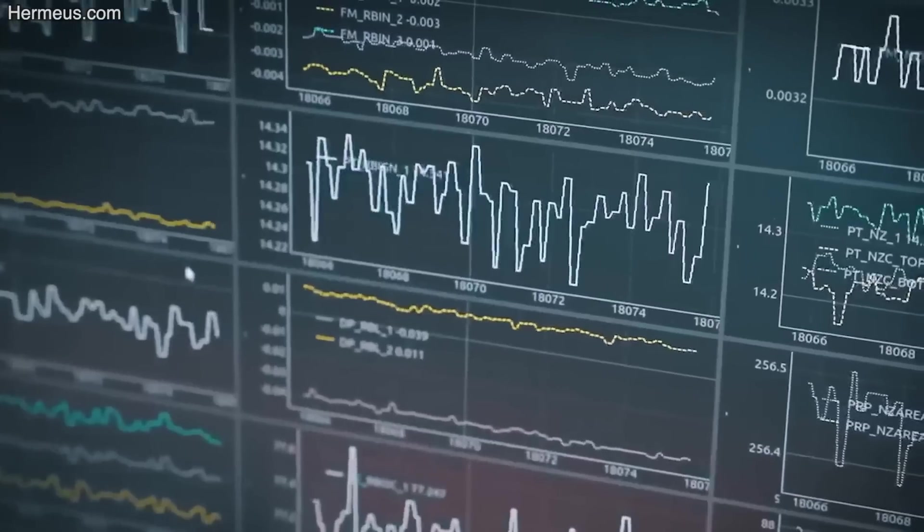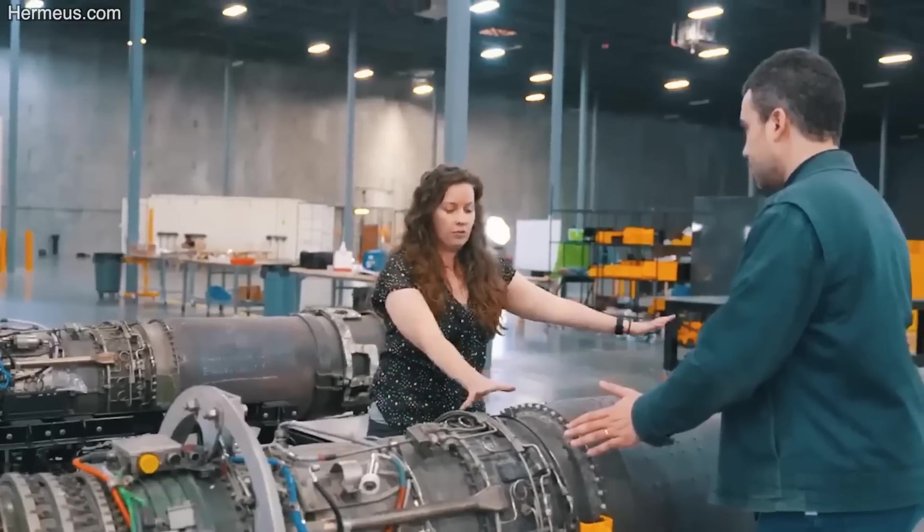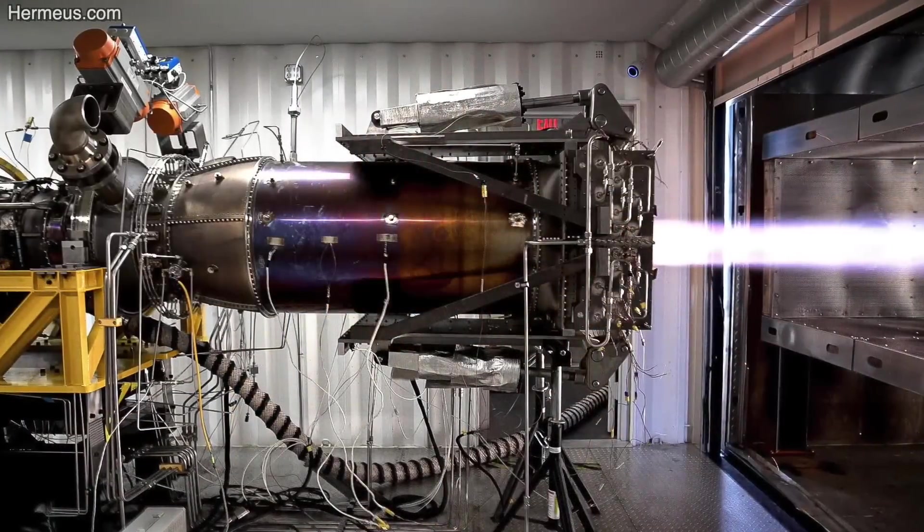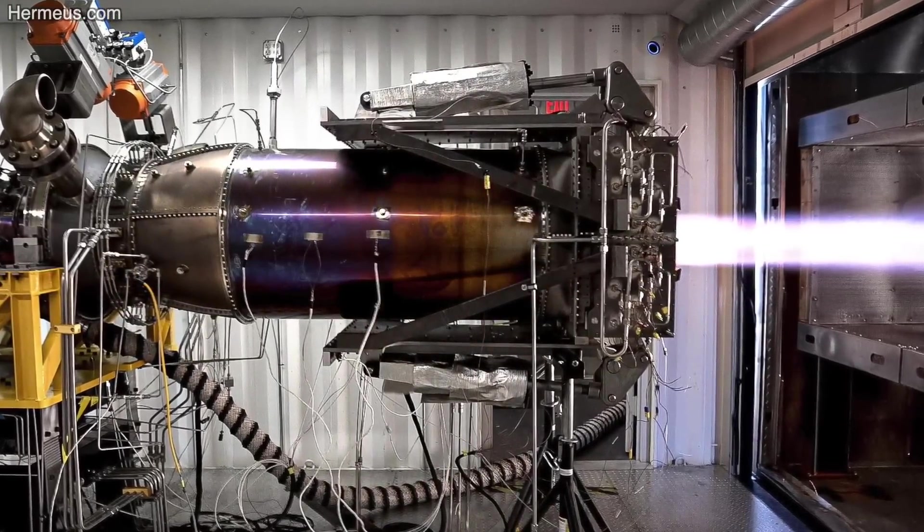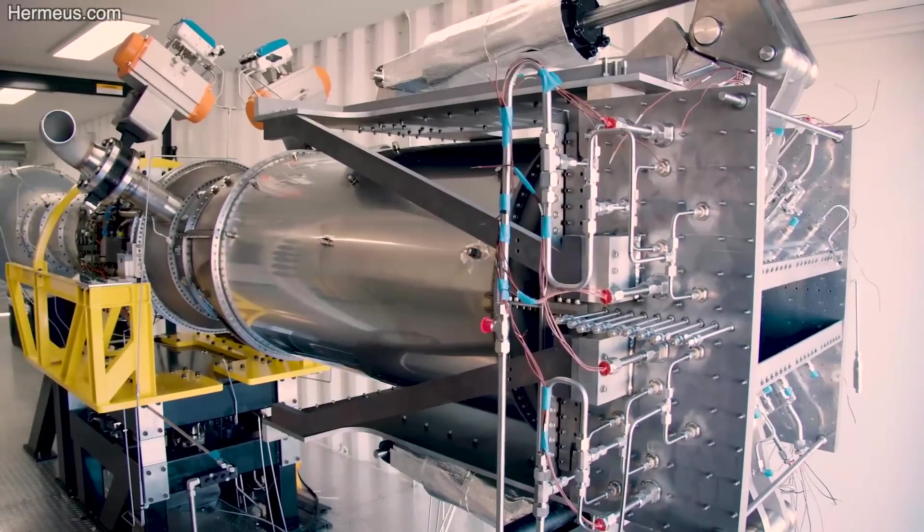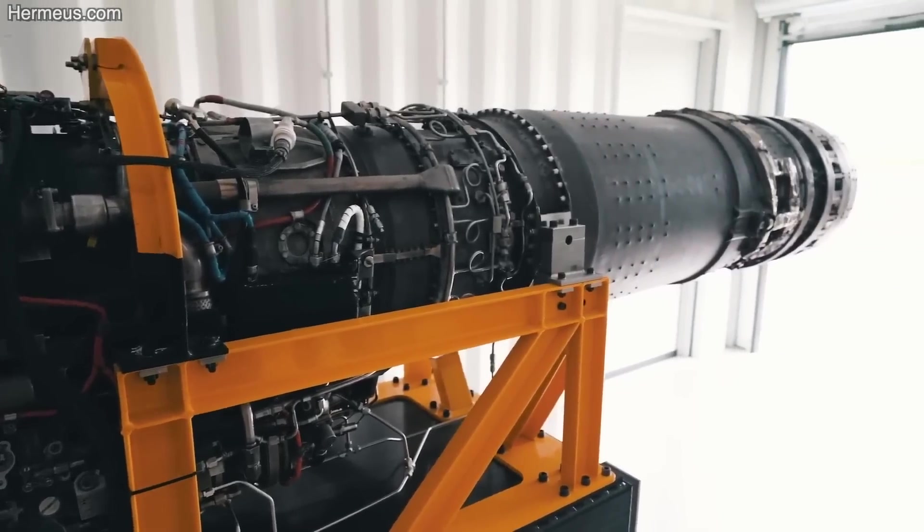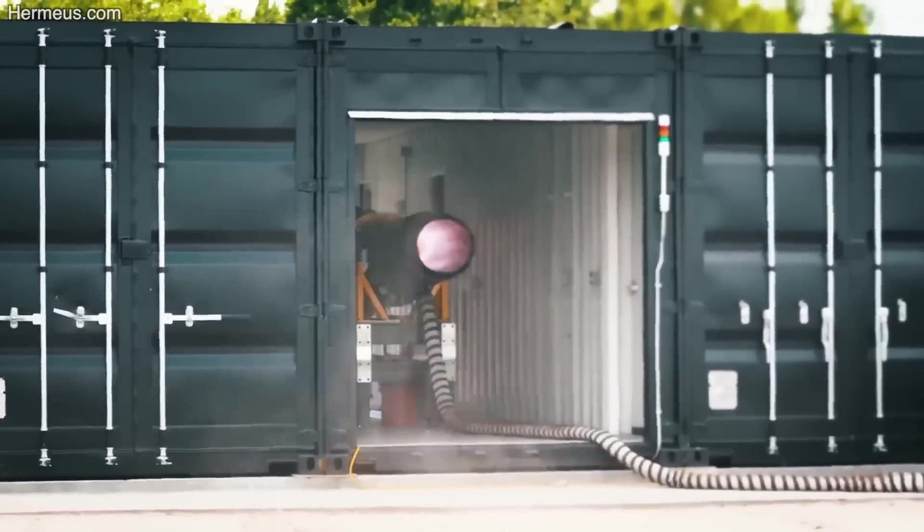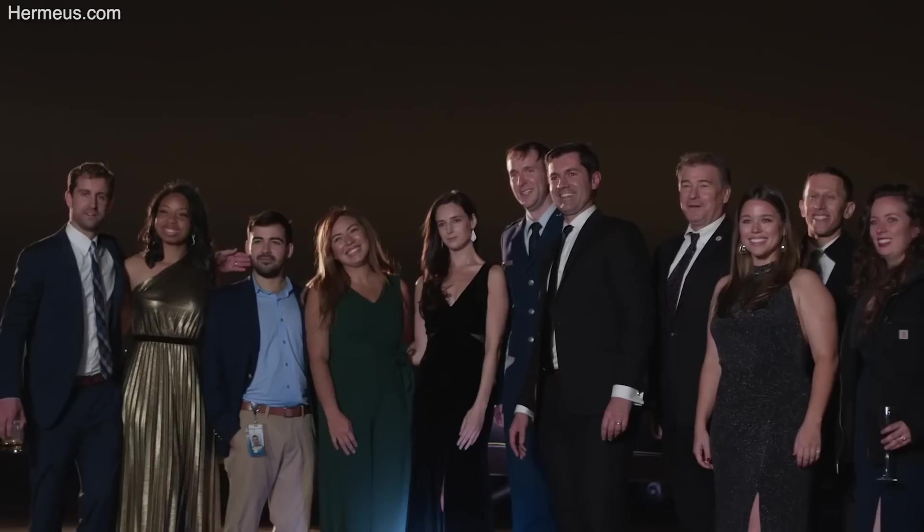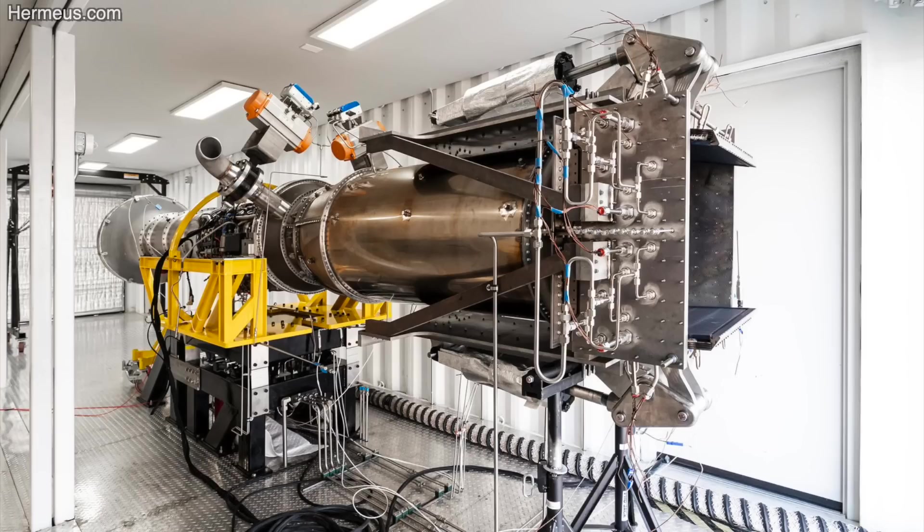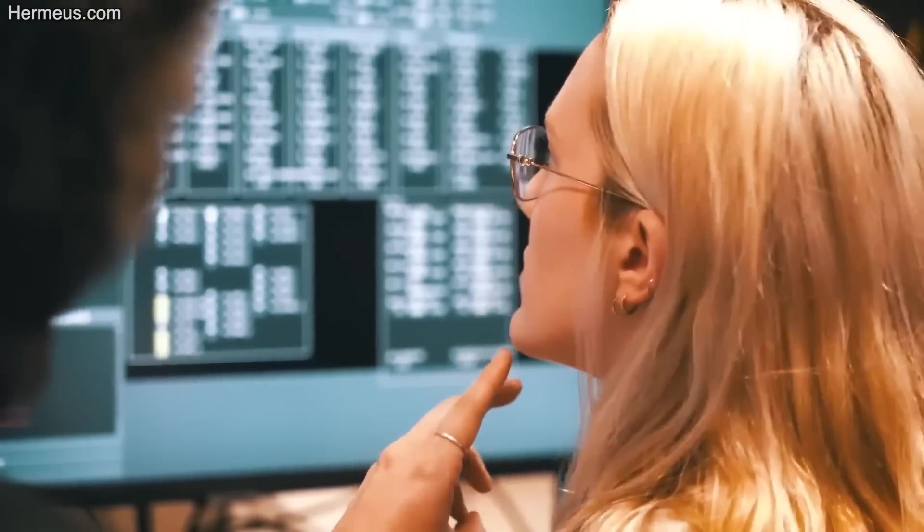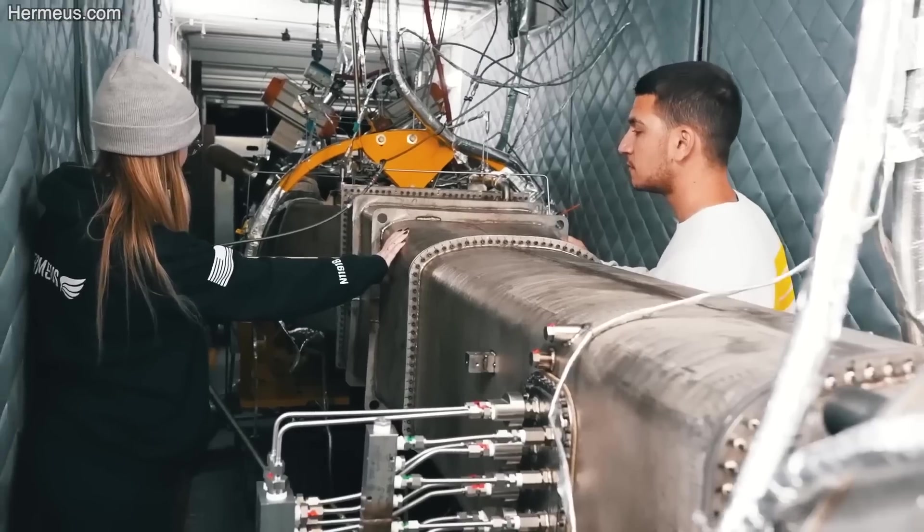In interviews, Hermes CEO AJ Piplica explained that their TBCC engine had a mass flow rate 10 times greater than the test prototype. He added that the team developed a pressure burner and nozzle for the engine's rear end, a ram burner and nozzle for its back, as well as a bypass system inlet and pre-cooler. In the summer of 2022, the startup showcased their Chimera work, igniting an afterburner at their test site in Atlanta. This marked the final step in the static test campaign at sea level, proving the team could run their patented engine at full throttle on the ground.